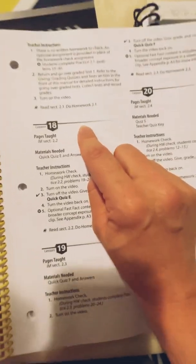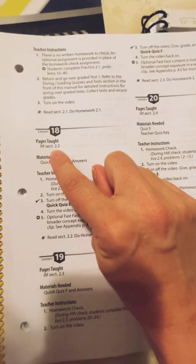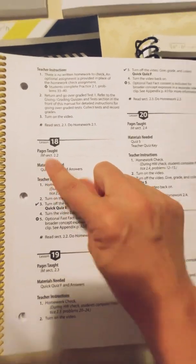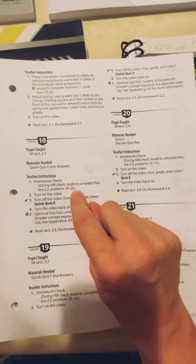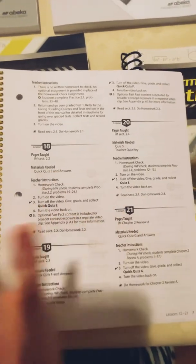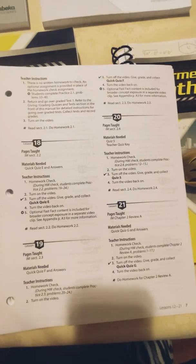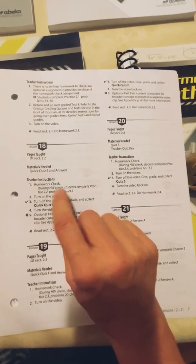So I'm going to go on and get to a more ideal day. Look at lesson 18—it shows you the pages that are taught. IM stands for intermediate mathematics. Everything is abbreviated within the lesson guide and it has the abbreviation meanings in the front of the book. It'll go over that with you. HW is for homework check. They usually start with a homework check. You're going to turn the video on.